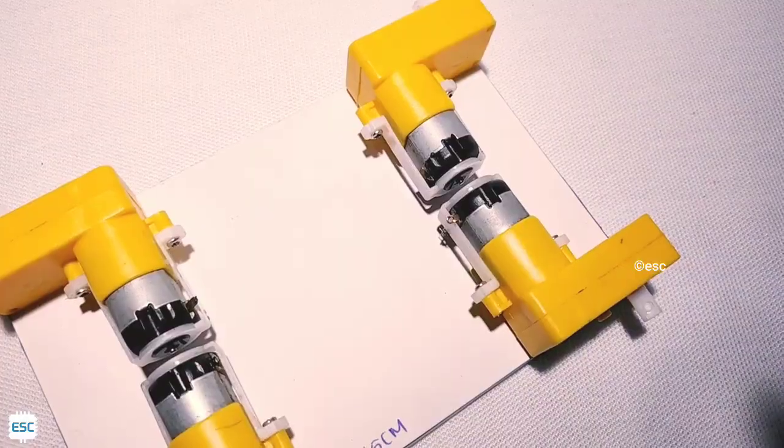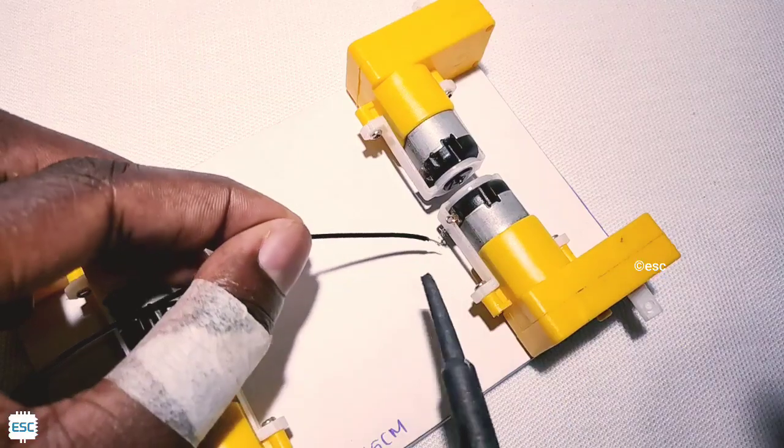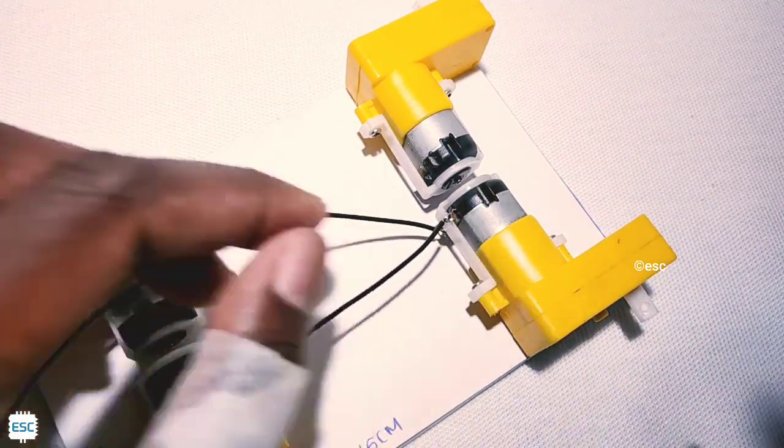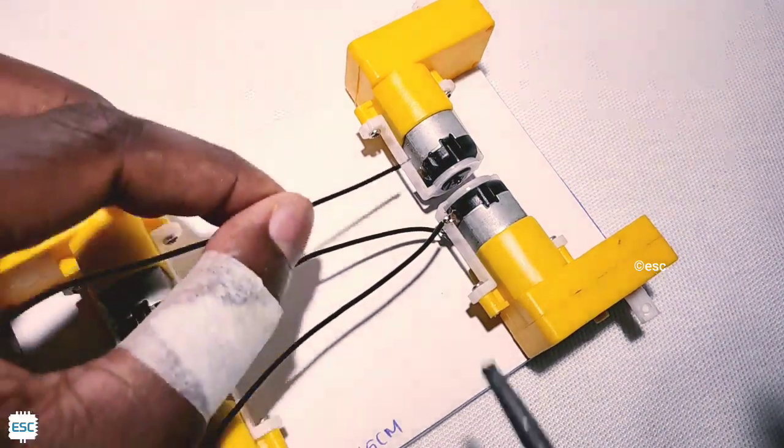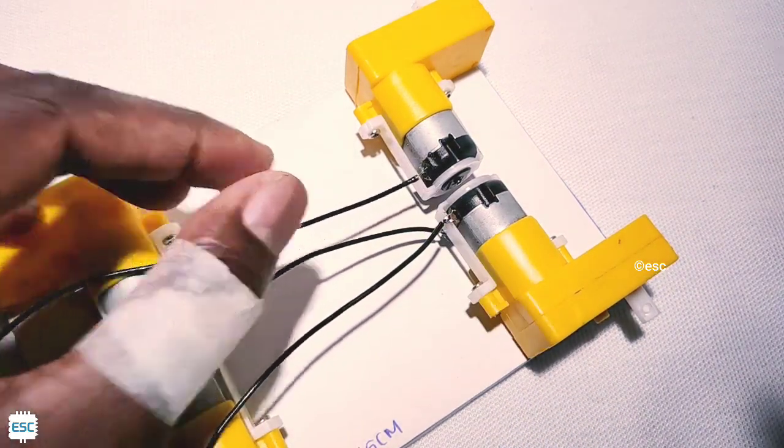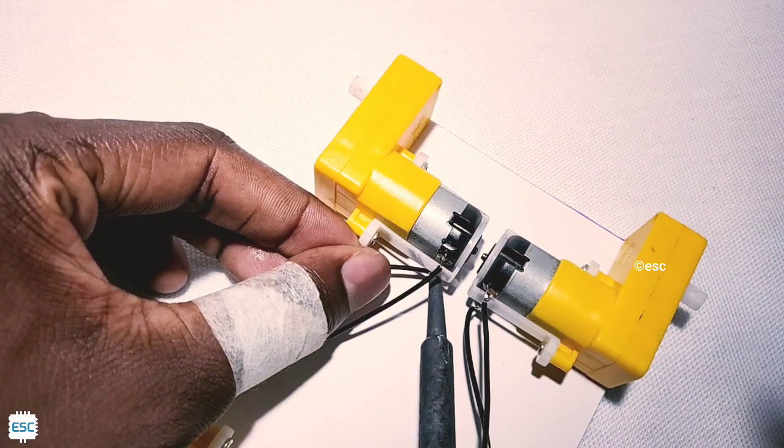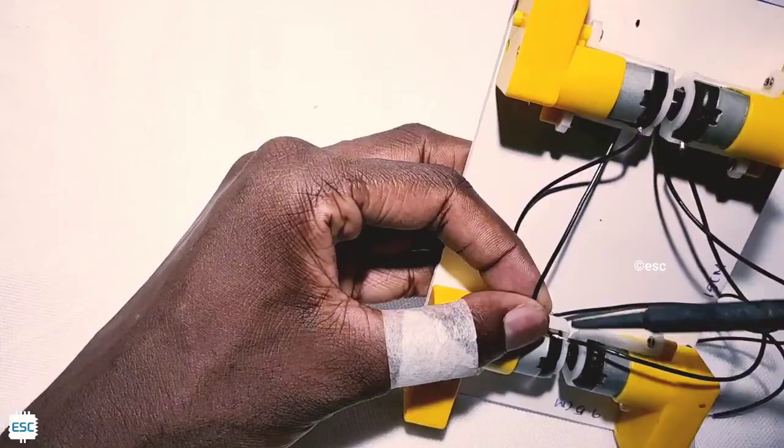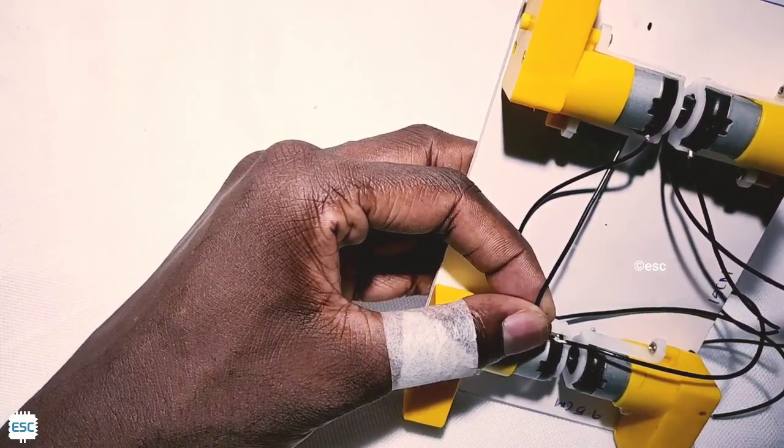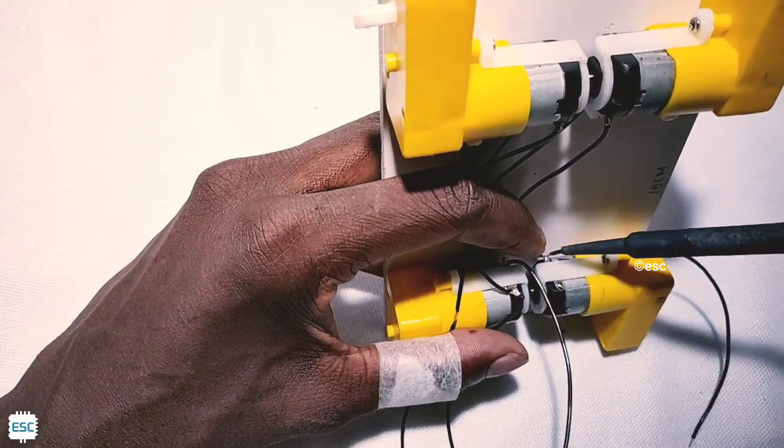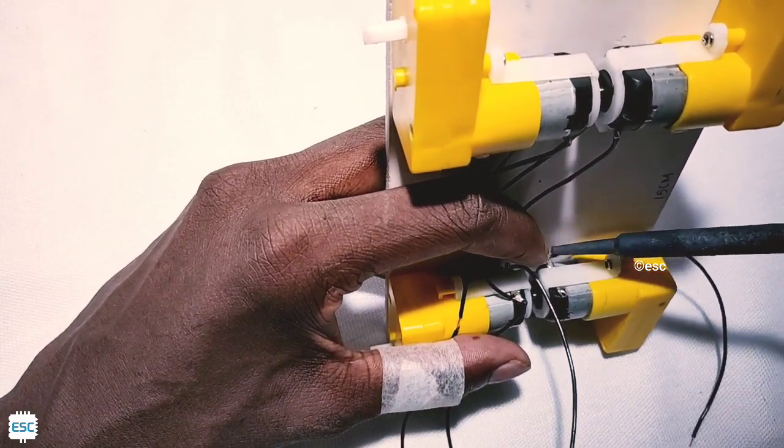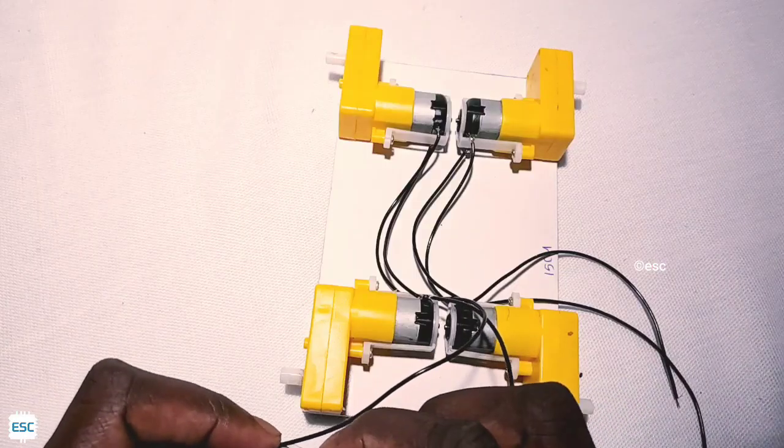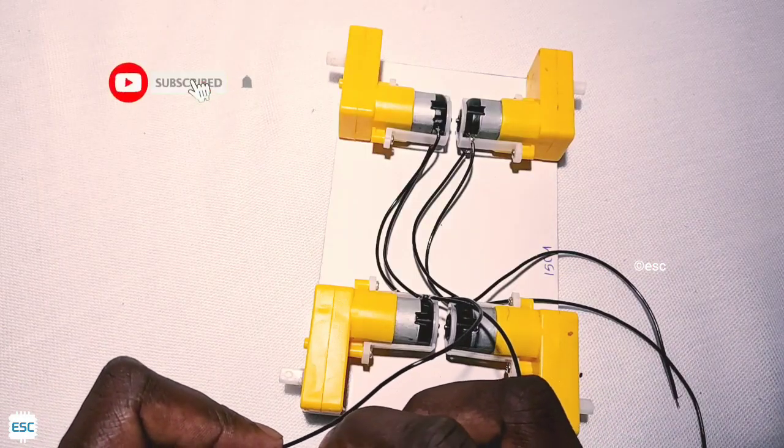I fixed the 4 motors on the chassis. Now let's connect wires to the motors. It's very simple, just connect two right motors together and two left motors together. After connecting, let's check that the motors move in the same direction.